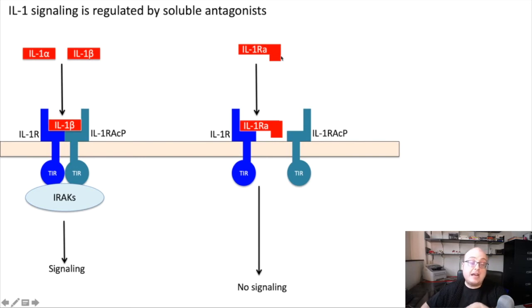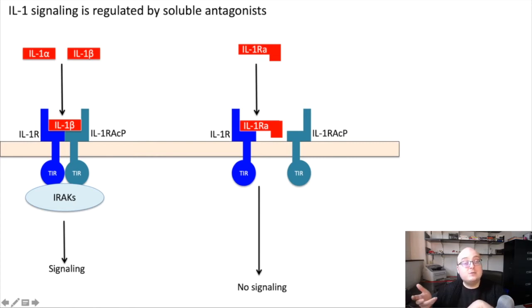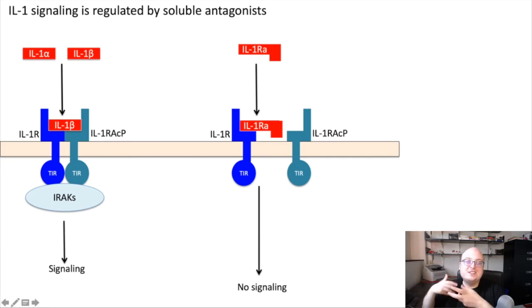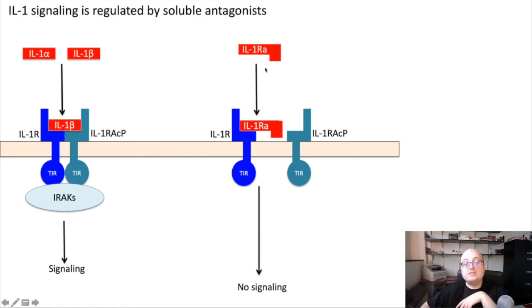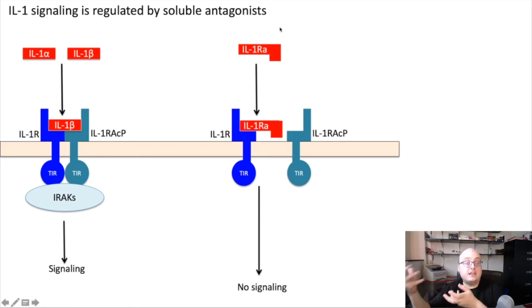When the accessory protein can't bind the IL-1 receptor, IRACs cannot be recruited, and we get no signaling. This is a simple but effective way to turn off IL-1 receptor signaling. Interestingly, some pathogens also express IL-1 receptor antagonists — in that case, they want to turn off IL-1 signaling in order to evade the immune system. So this mechanism can go both ways, and it's one way we can modulate the intensity of inflammatory responses downstream of the cytokine.